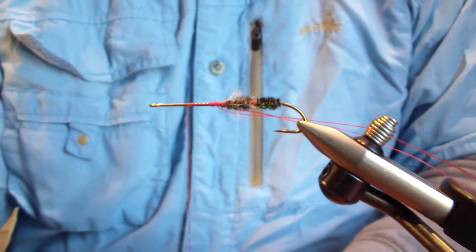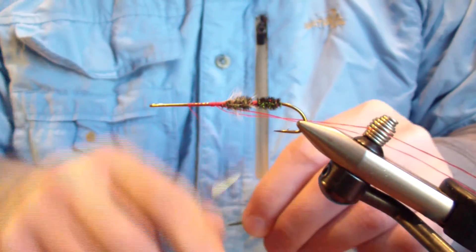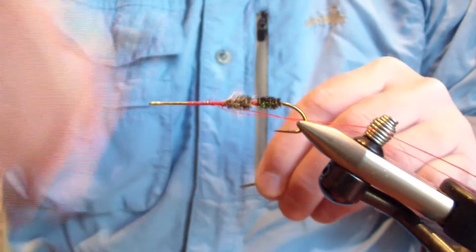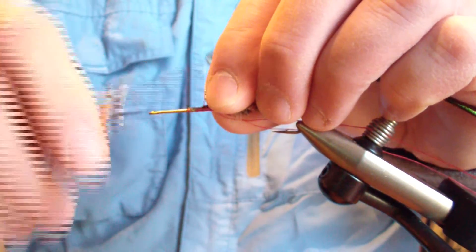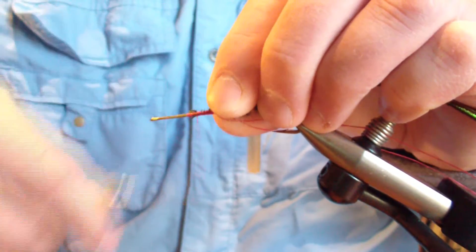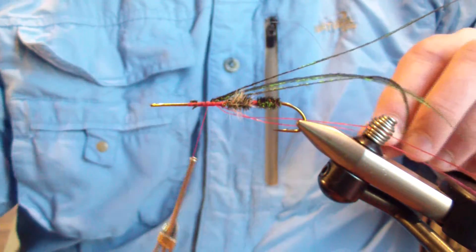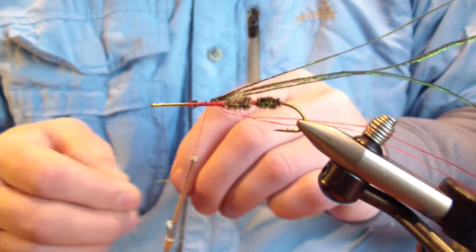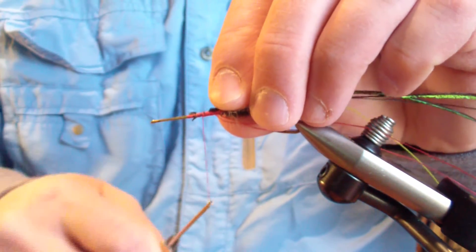And we're going to tie in our peacock curl in normal fashion. And then we're going to tie in the color, like in the Skittle, the wire that we want. In this case we're using chartreuse wire.